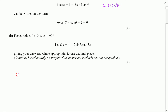Writing that out, we have 4cosθ − 1 = 2sinθ, and then tan changes to sinθ divided by cosθ. Now I'm going to multiply through by cosθ, which gives me 4cos²θ minus cosθ on the left, and on the right, tidying things up, I've got 2sin²θ.